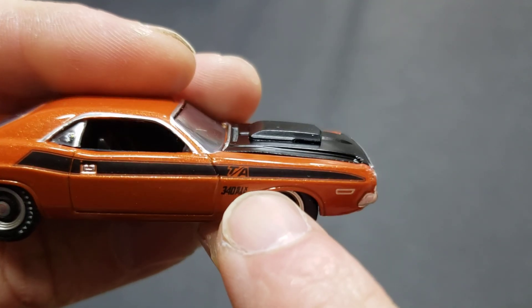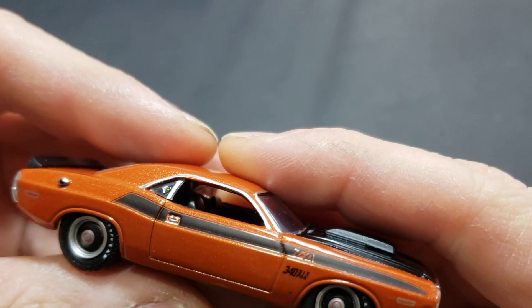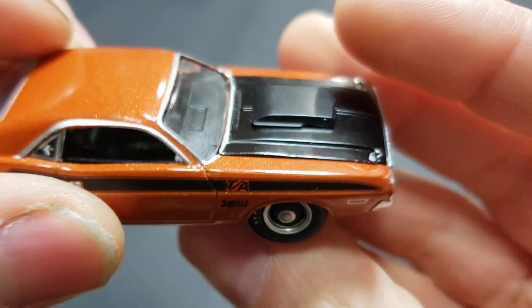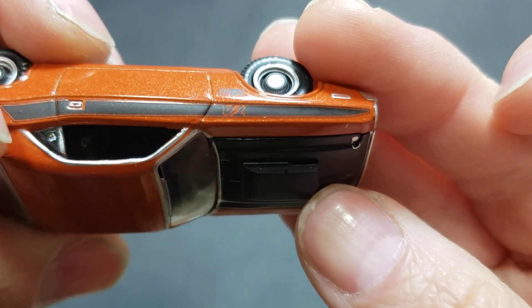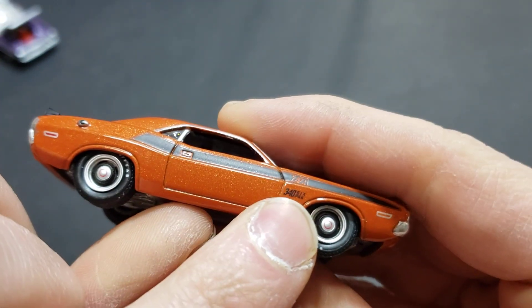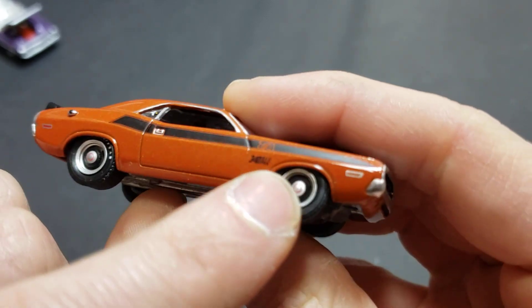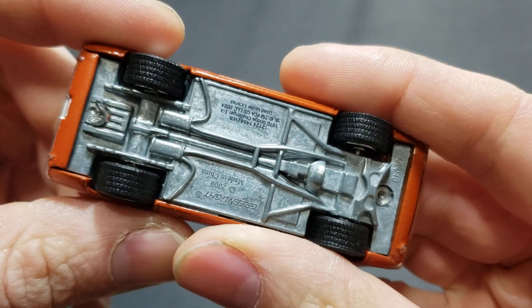And once again you have TA, which, to me, I don't know, does this appear easier to see than the other side? I don't know, it might just be me. 340 six pack written on the side there. Once again door handles, interior all black. Well obviously we know the doors don't open.